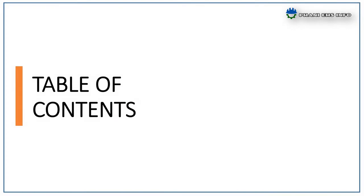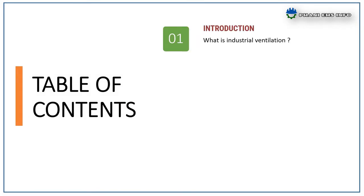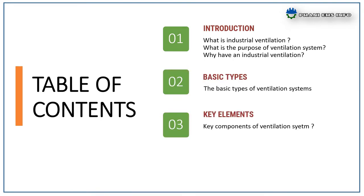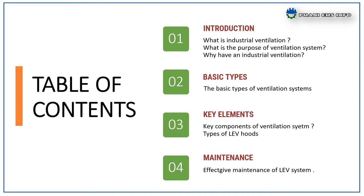The main contents in this topic are: what is industrial ventilation, what is the purpose of a ventilation system, why have an industrial ventilation system, basic types of ventilation systems, key elements of a ventilation system, types of LEV hoods, and how to manage an LEV system effectively.